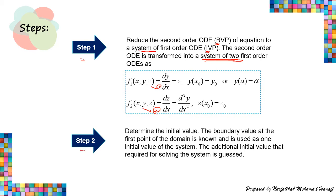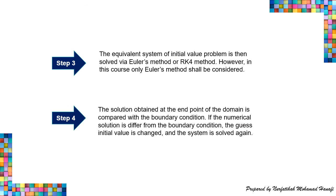Step two: determine the initial value. The boundary value at the first point of the domain is known and is used as one initial value of the system. The additional initial value required for solving the system is guessed.